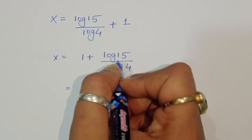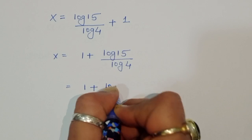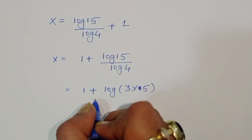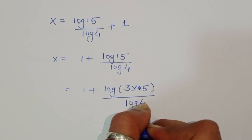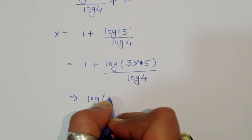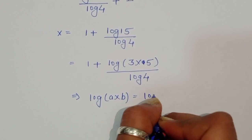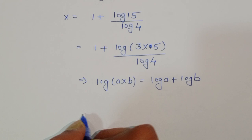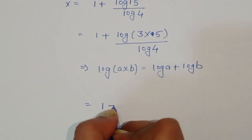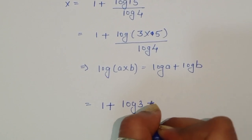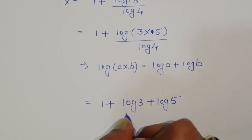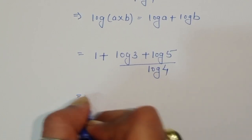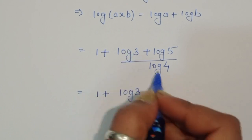Now we expand log of 15. Since 3 times 5 equals 15, we write log of 3 times 5. Using the formula log of a times b equals log of a plus log of b, we get log of 3 plus log of 5. So x equals 1 plus log of 3 divided by log of 4, plus log of 5 divided by log of 4.